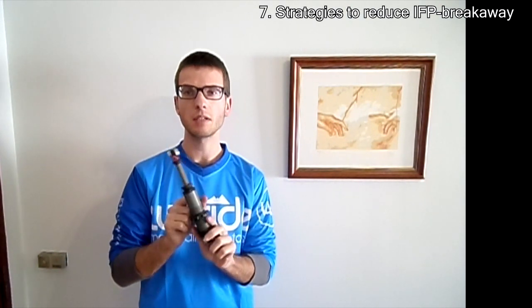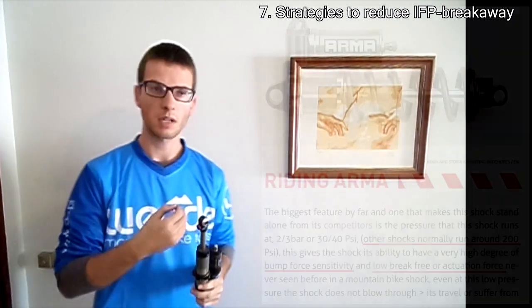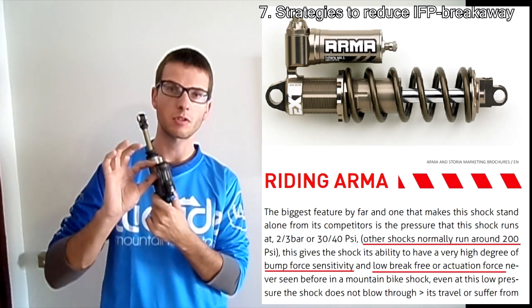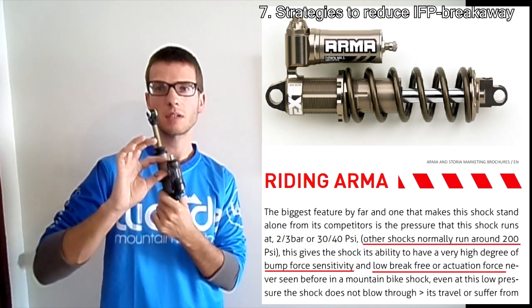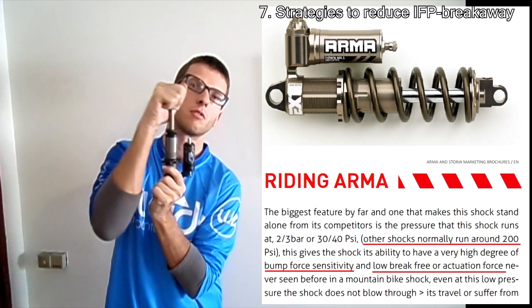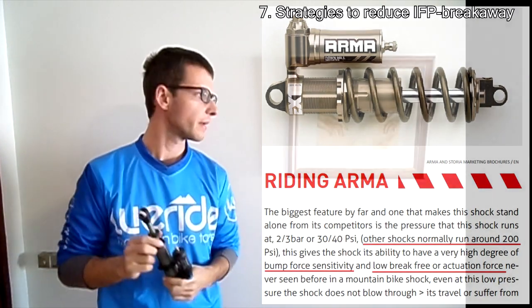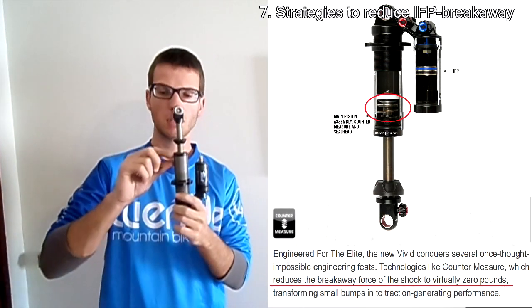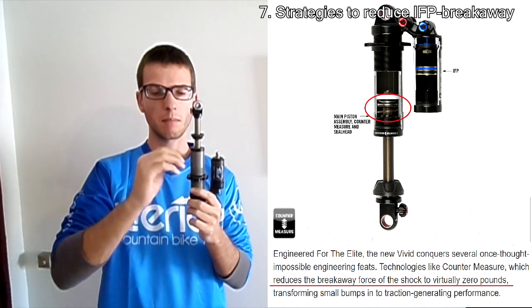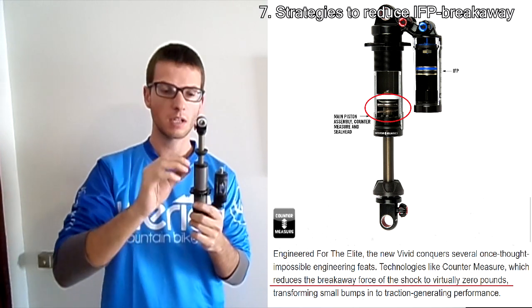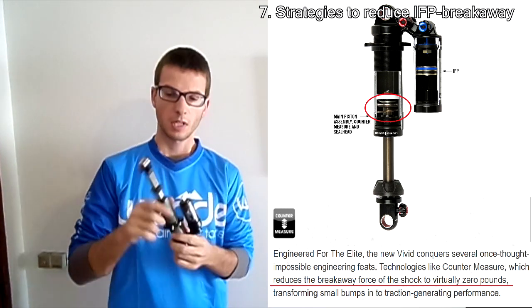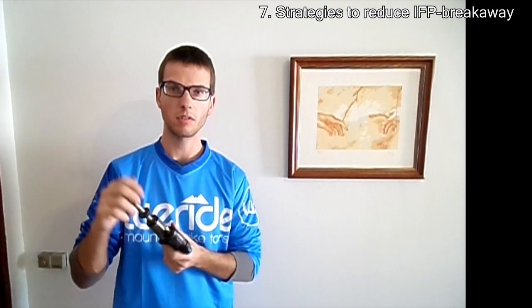To reduce breakaway force from the IFP, some companies use different strategies. For instance, Öhlins shocks can use a very low IFP pressure — around 30 PSI — without affecting shock performance, producing a very low breakaway force. Another strategy is used by RockShox in their Vivid shocks: they use a negative coil spring behind the main piston to eliminate the IFP-produced breakaway force. I don't have a Vivid to test, but it seems like a quite interesting concept.